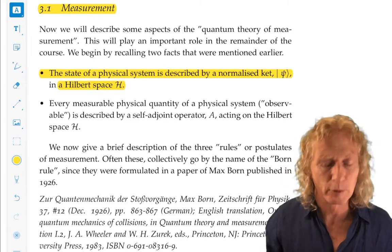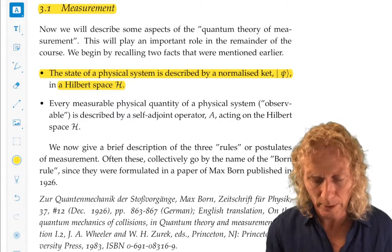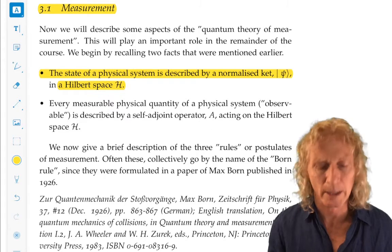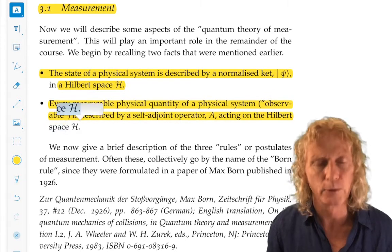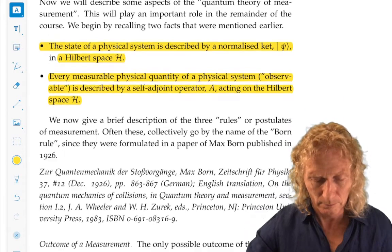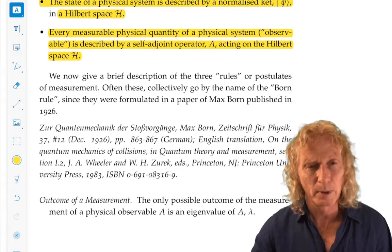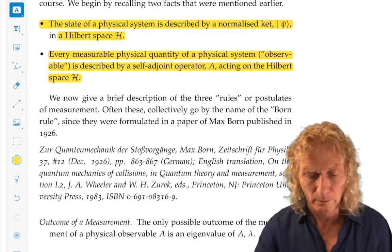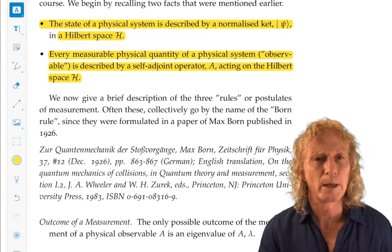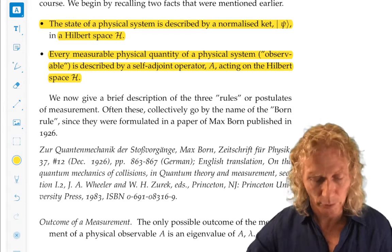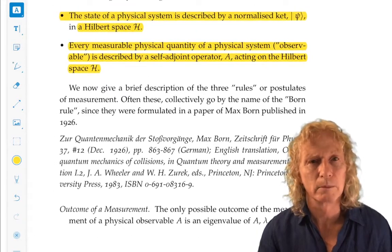Now, every measurable physical quantity of a physical system, or observable, is described by a self-adjoint operator A acting on the Hilbert space H. This is where quantum mechanics really differs from classical mechanics. With this setup, a state space, Hilbert space, and an observable described by a self-adjoint operator on that Hilbert space, we want to talk about measuring A, the observable.